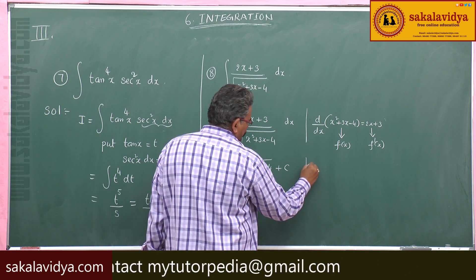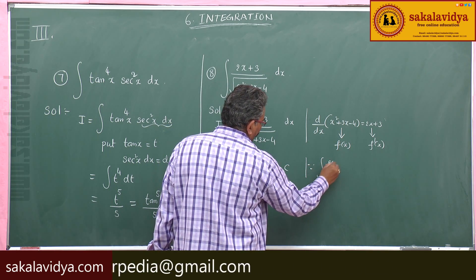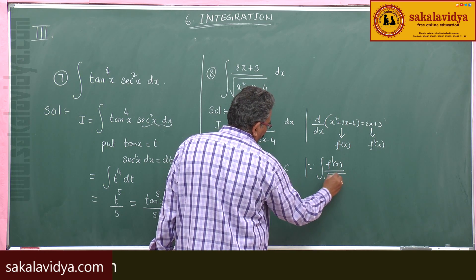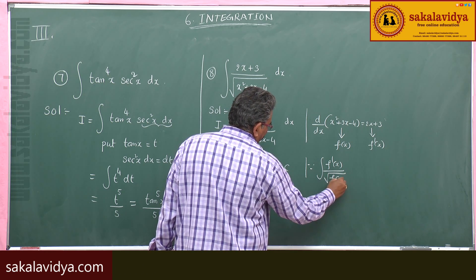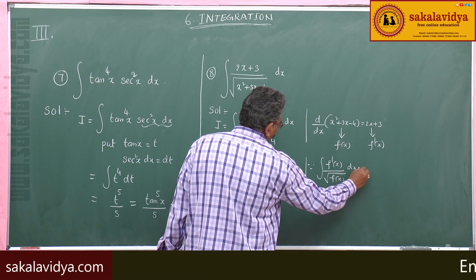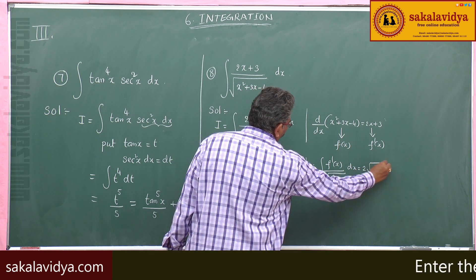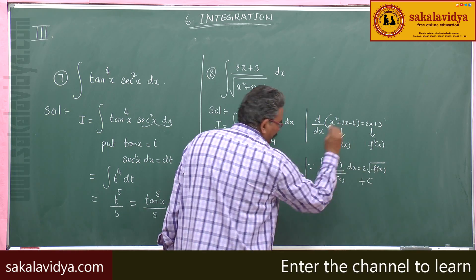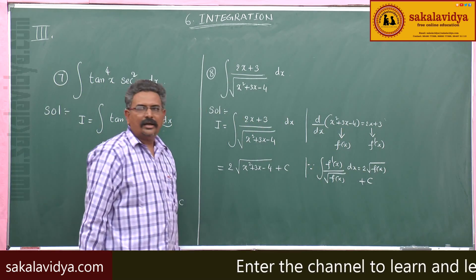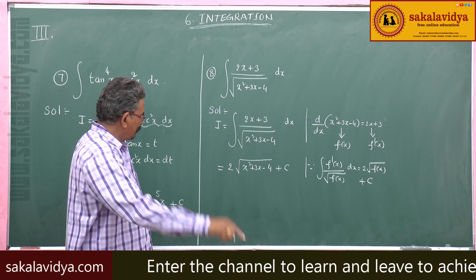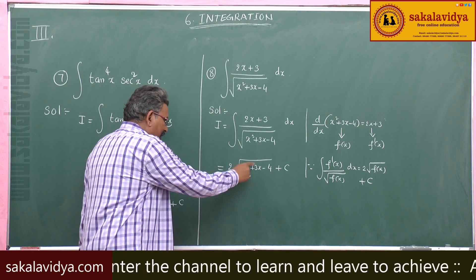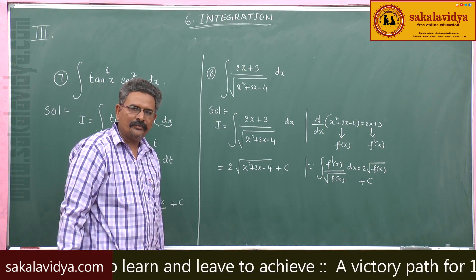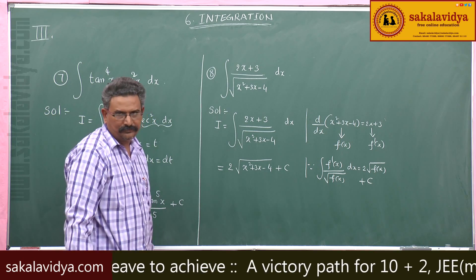Since integral of f'(x) divided by root f(x) dx is equal to 2 root f(x) plus constant of integration. Otherwise, by substituting x² + 3x − 4 equal to t, the problem can also be solved.